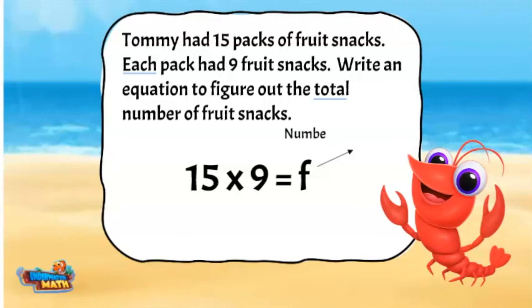The F is a variable representing the total number of fruit snacks. 15 represents the number of packs and 9 represents the number of snacks per pack.